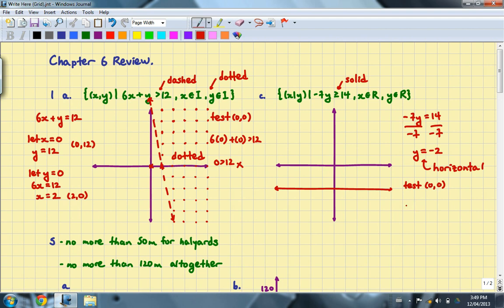So I have negative 7 times 0, and it's supposed to be greater than or equal to 14. And that's clearly not the case. So what I'll end up doing is shading the side that's opposite 0, 0. So here's 0, 0. I'm going to be shading in this side here. And notice that it is real numbers for the domain and range, so I will be shading with a highlighter. So on the test, what you can do is you can simply shade in the area with your pencil. And that's all you need to do.